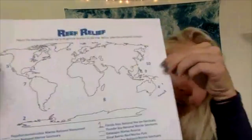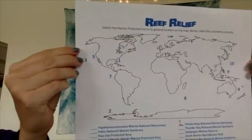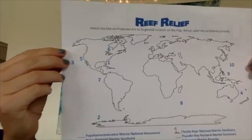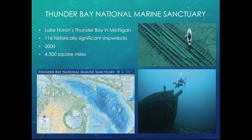Here's a really interesting one: we have Thunder Bay National Marine Sanctuary, actually located in Michigan. Thunder Bay National Marine Sanctuary is in Lake Huron's Thunder Bay in Michigan. It has 116 historically significant shipwrecks — remember, MPAs don't just have to protect fish and animals. This was created to protect all the shipwrecks in that area. It's about 4,300 square miles and was created in the year 2000.